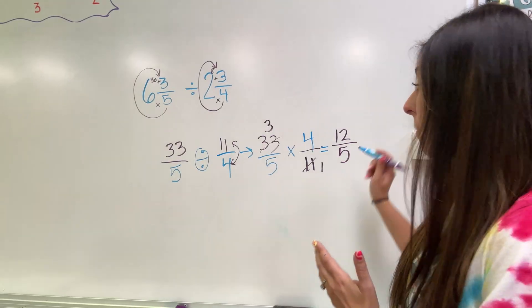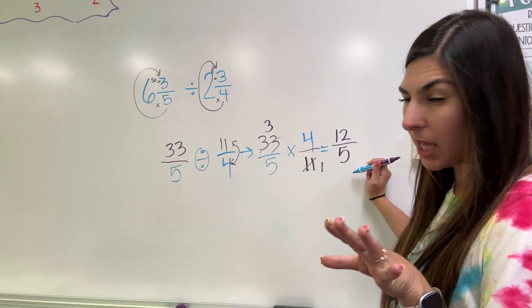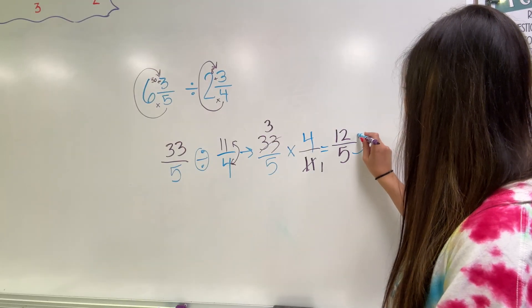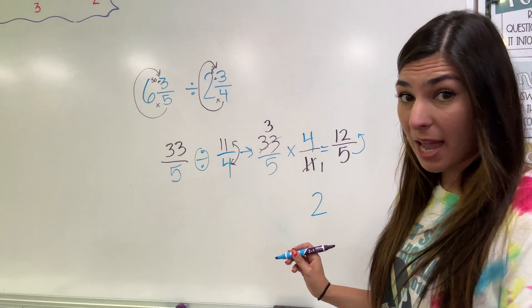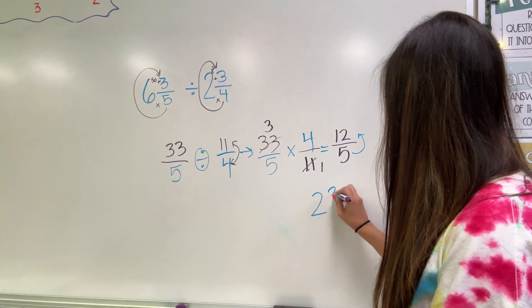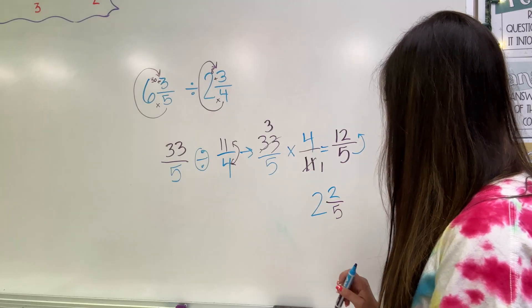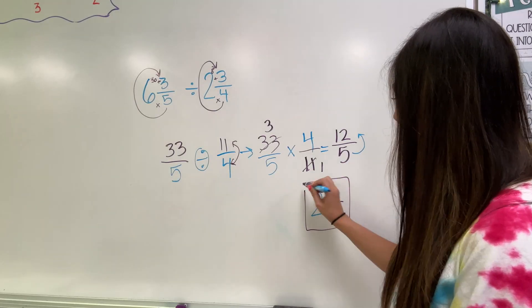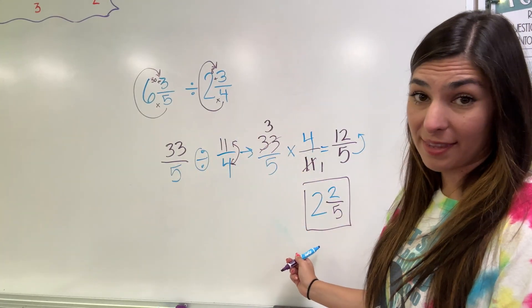I have an improper fraction. My numerator is bigger than my denominator. That means there's a whole number hiding in there. So how many times does five go inside of 12? Two times. That gives me 10. And then I have two left over. So then I have my two left over and I keep my denominator five. That is my answer.